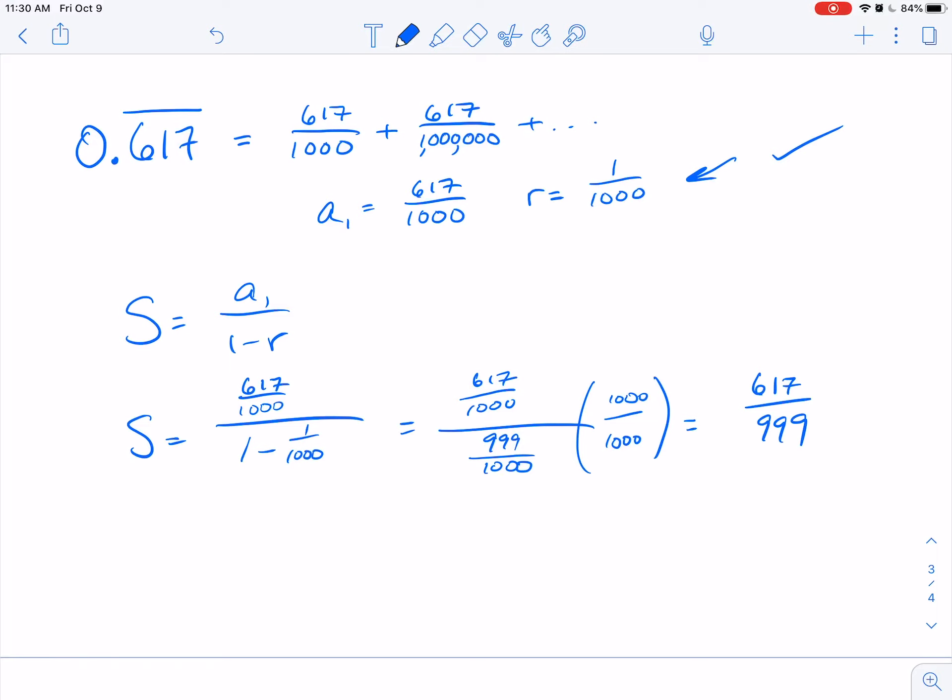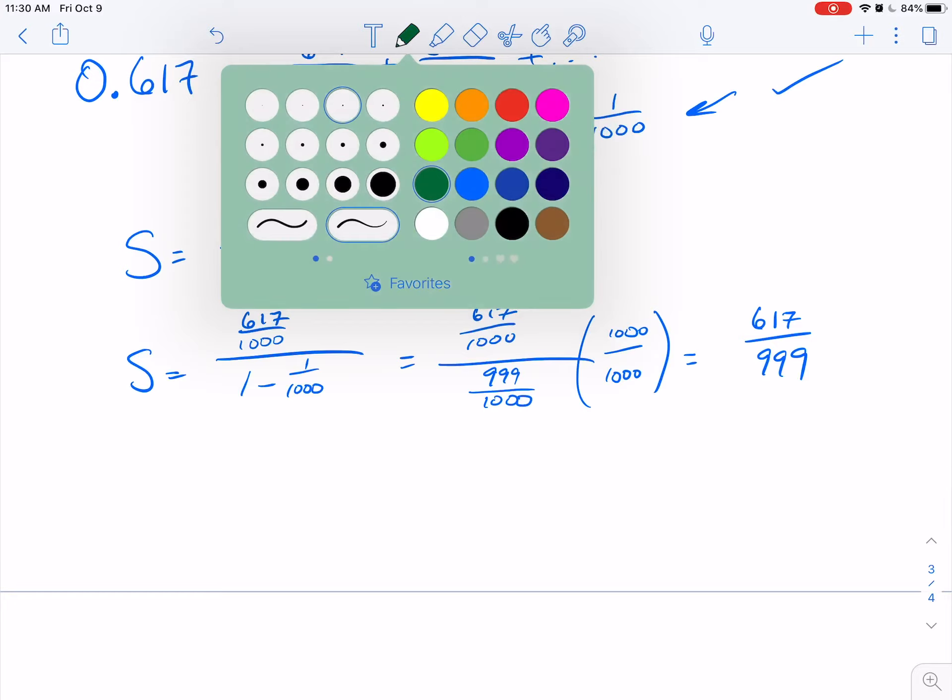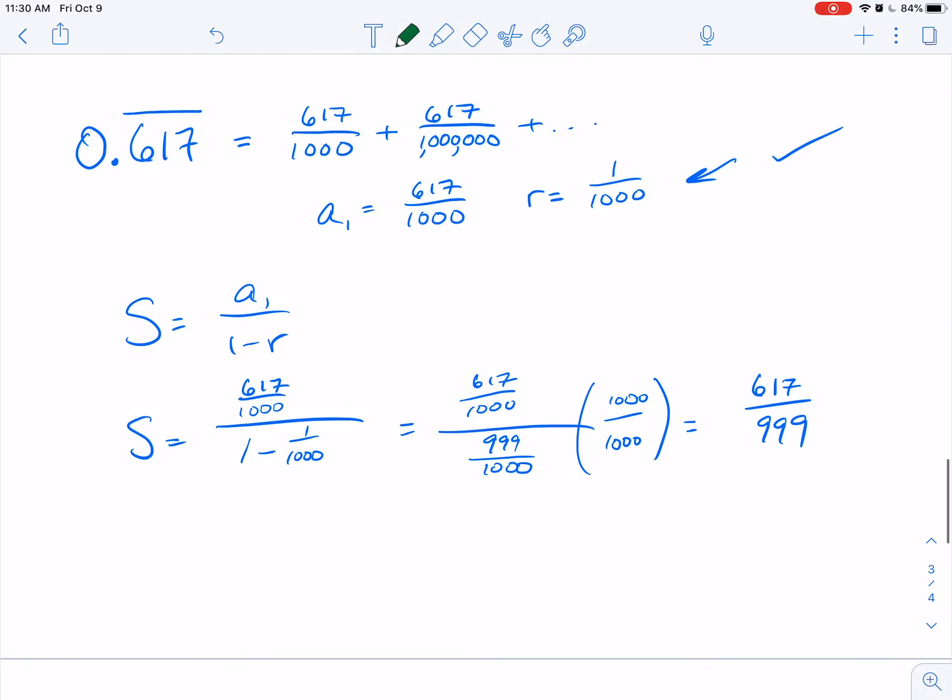The next thing - what happens though if instead of all of it repeating, say it's 0.6 and then 1, 7 is repeating? Well, then what we have here is 0.6 plus 0.017 plus 0.00017...